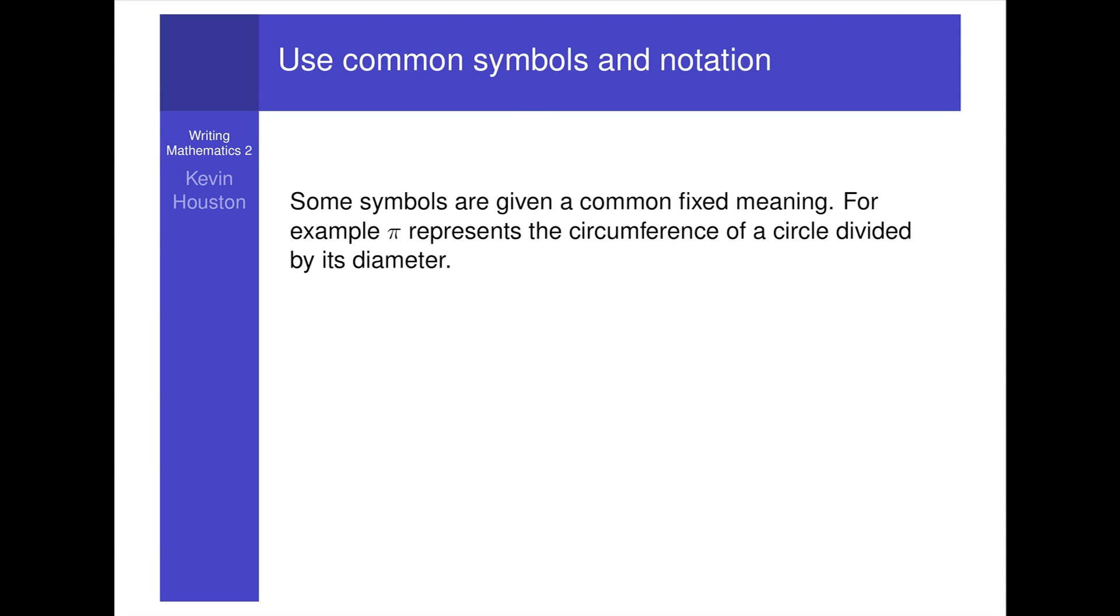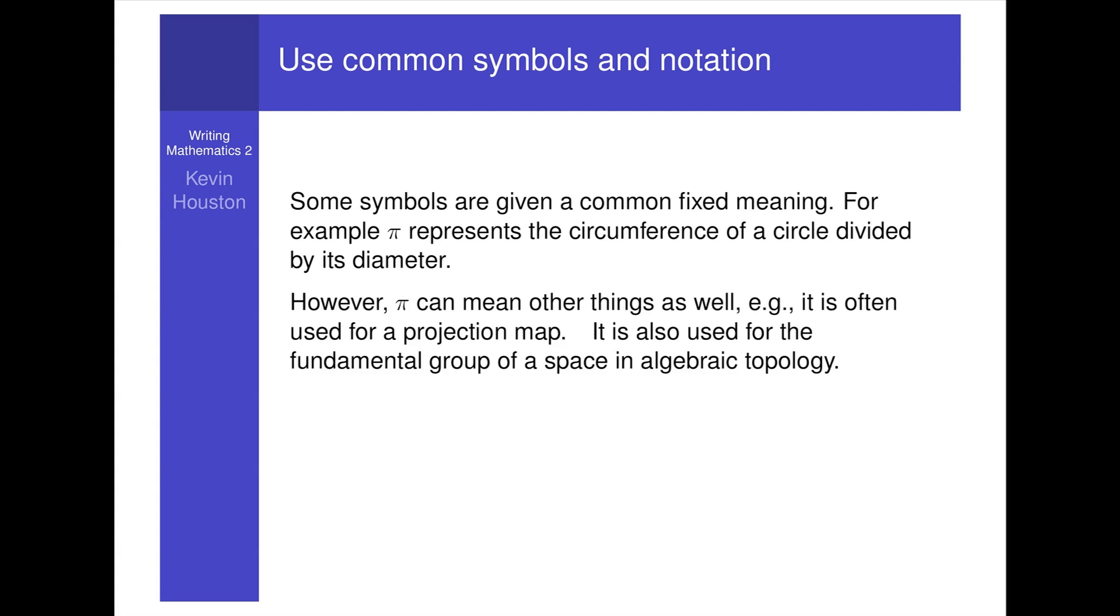Some symbols are given a common fixed meaning. For example, pi represents the circumference of a circle divided by its diameter. However, pi can mean other things as well. E.g. it is often used for a projection map, since pi represents P and P is the first letter of projection. It is also used for the fundamental group of a space in algebraic topology.